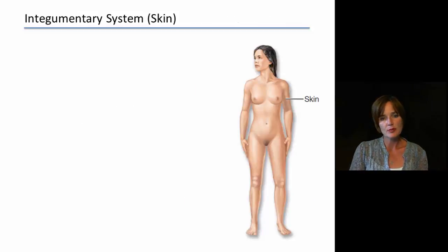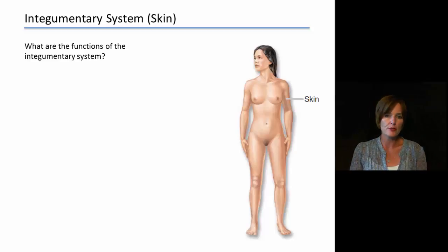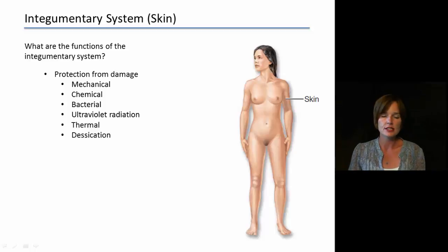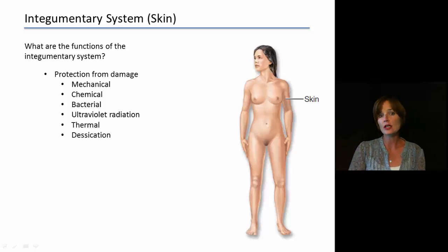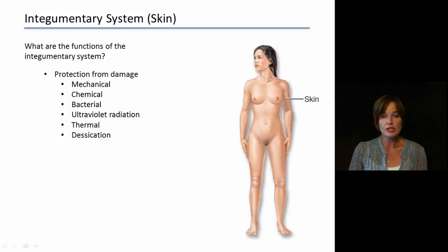Turning now to the integumentary system — the cutaneous membrane or skin. What are its functions? Protection is an obvious one since this is on the outermost portion of our body, but it's more than just a blanket statement of protection. The integumentary system protects from a whole long list of things. It protects from mechanical damage, meaning it is a tough layer that can withstand a lot of abrasion and provides cushioning. It also protects against chemical damage such as acids and bases, and we have many sensory receptors in our skin that alert us to any particular problems.